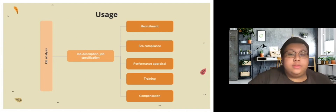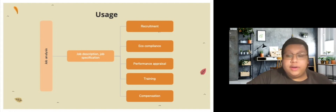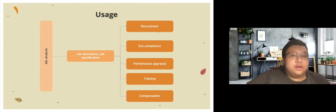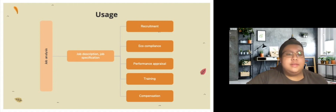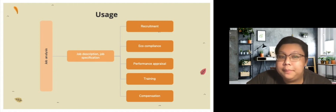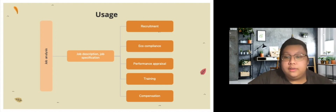After obtaining the information, we can use it for recruitment, EEO compliance, performance appraisal, training, and compensation. For example, in compensation, we do a job analysis to know what the requirements for a job are and how demanding the job is, so we can compensate accordingly based on the effort, skills, and knowledge people put into the job. For recruitment, by knowing the job description and job specifications, you can hire a more accurate person.